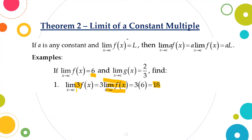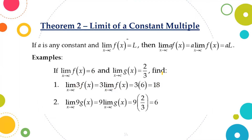Therefore, the limit of 3 times f of x as x approaches c will be equal to 18. Since 9 is a constant number, we will make this as our multiplier of the limit of g of x as x approaches c. Remember that the limit of g of x as x approaches c is equal to 2 thirds. Therefore, substituting 2 thirds, we will have 9 times 2 thirds, which will be equal to 6. Therefore, the final answer will be 6.